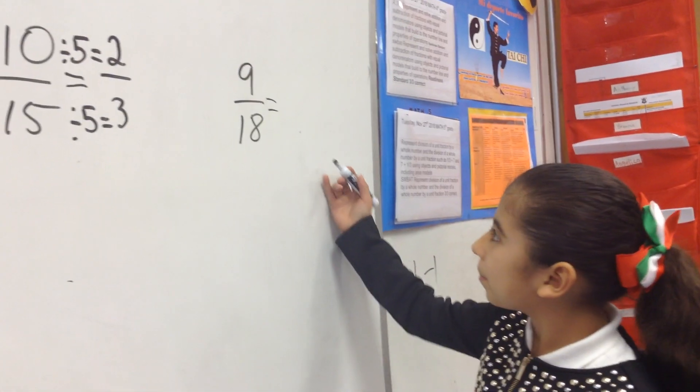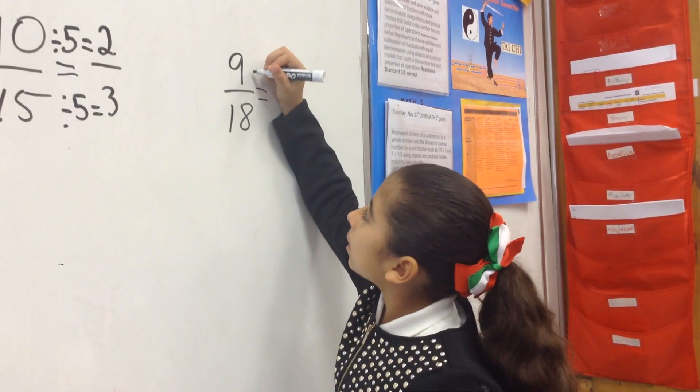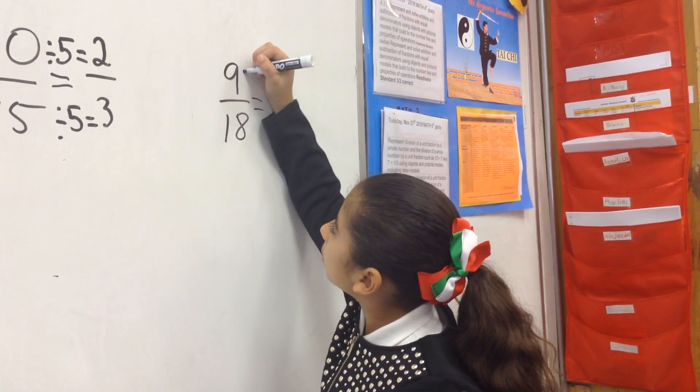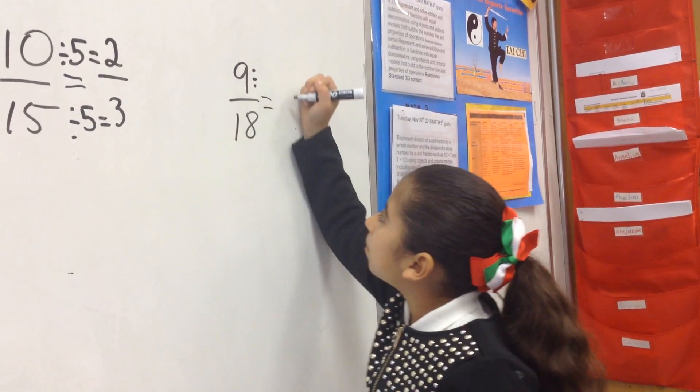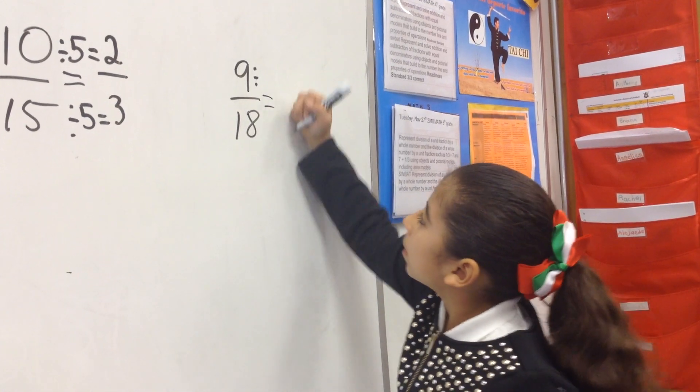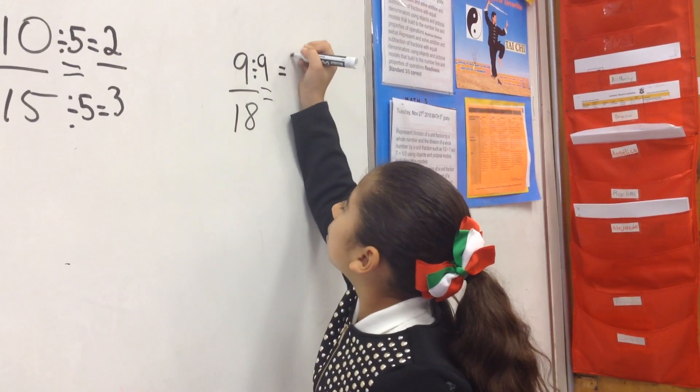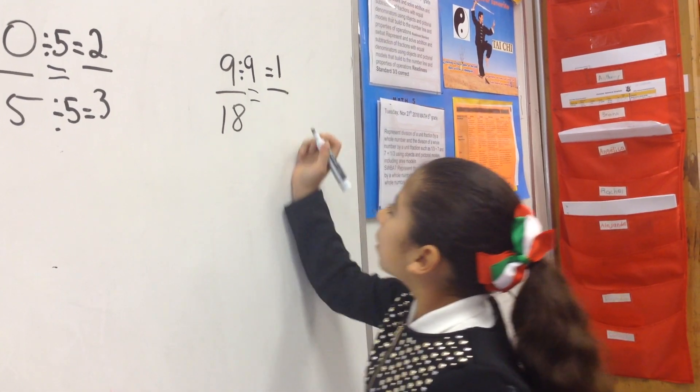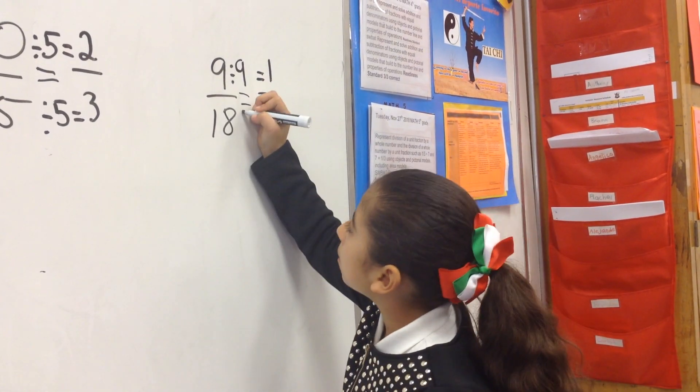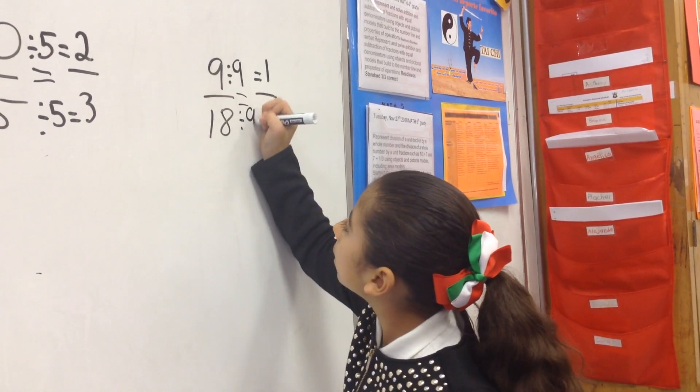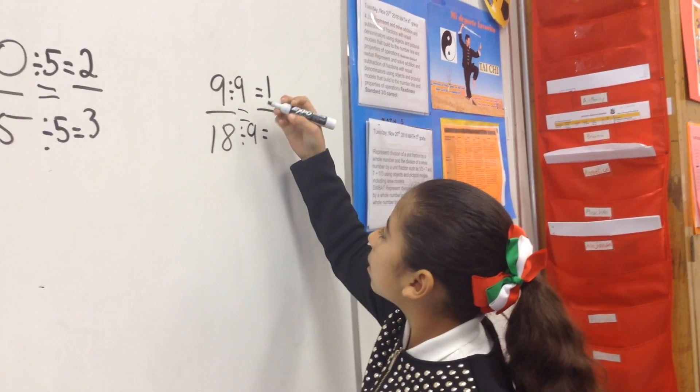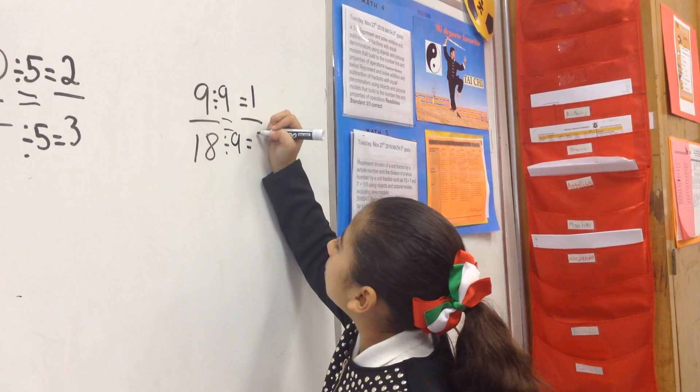18, equals to something. 9 divided by 9 equals 1. 18 divided by 9 equals 2.